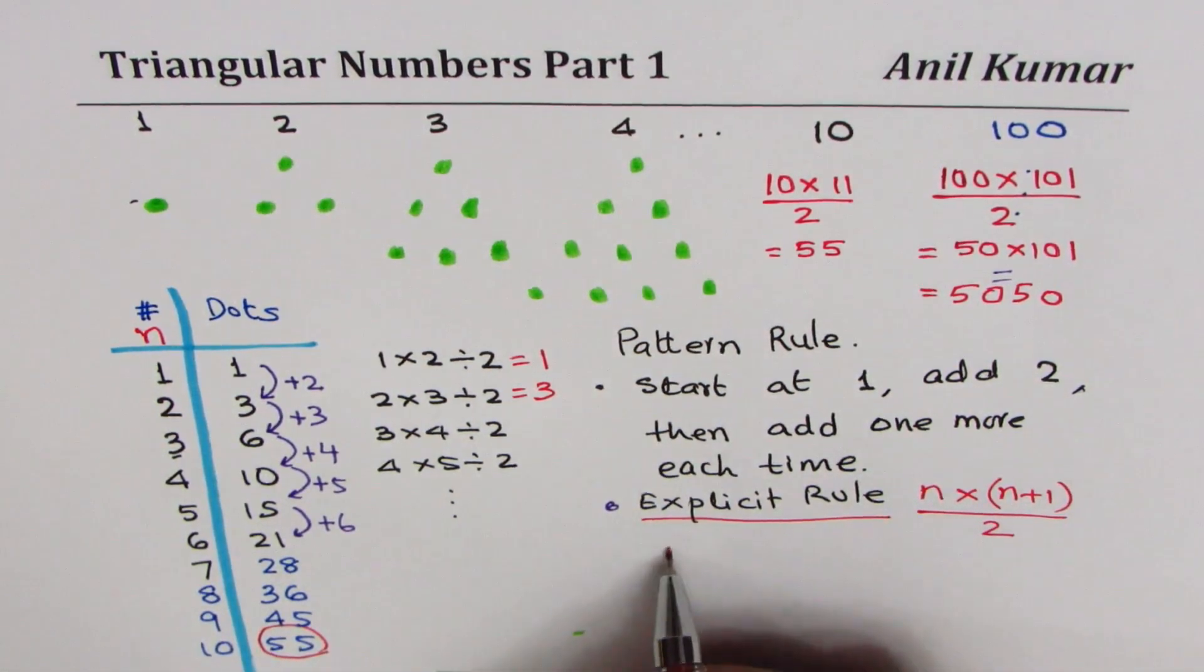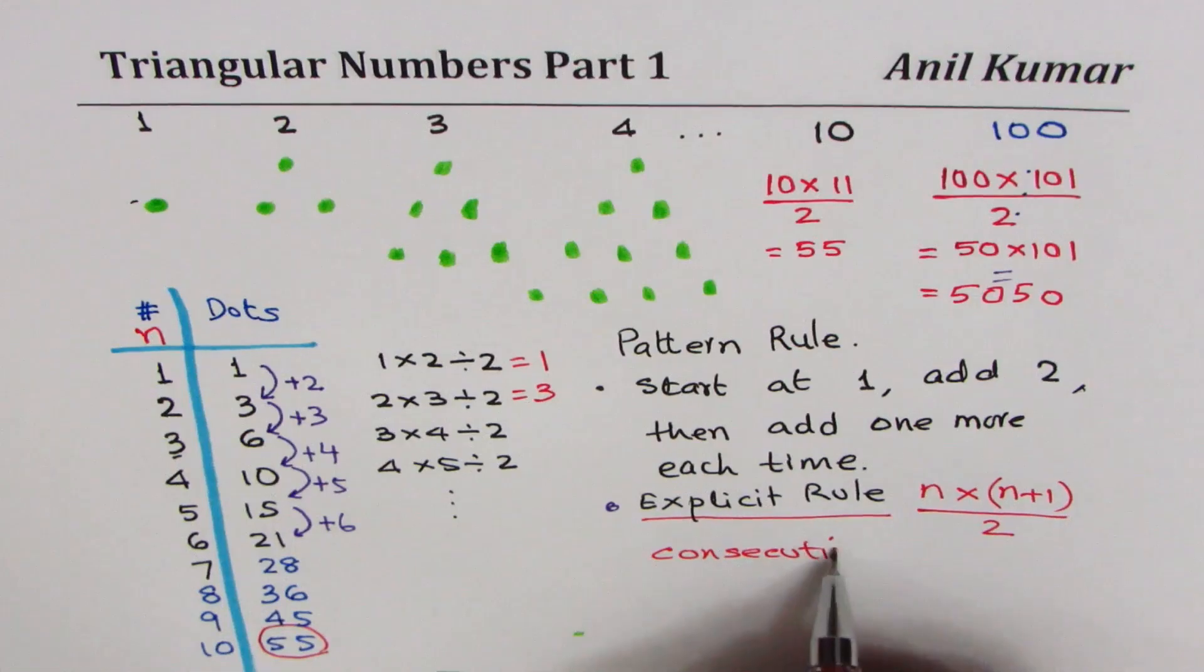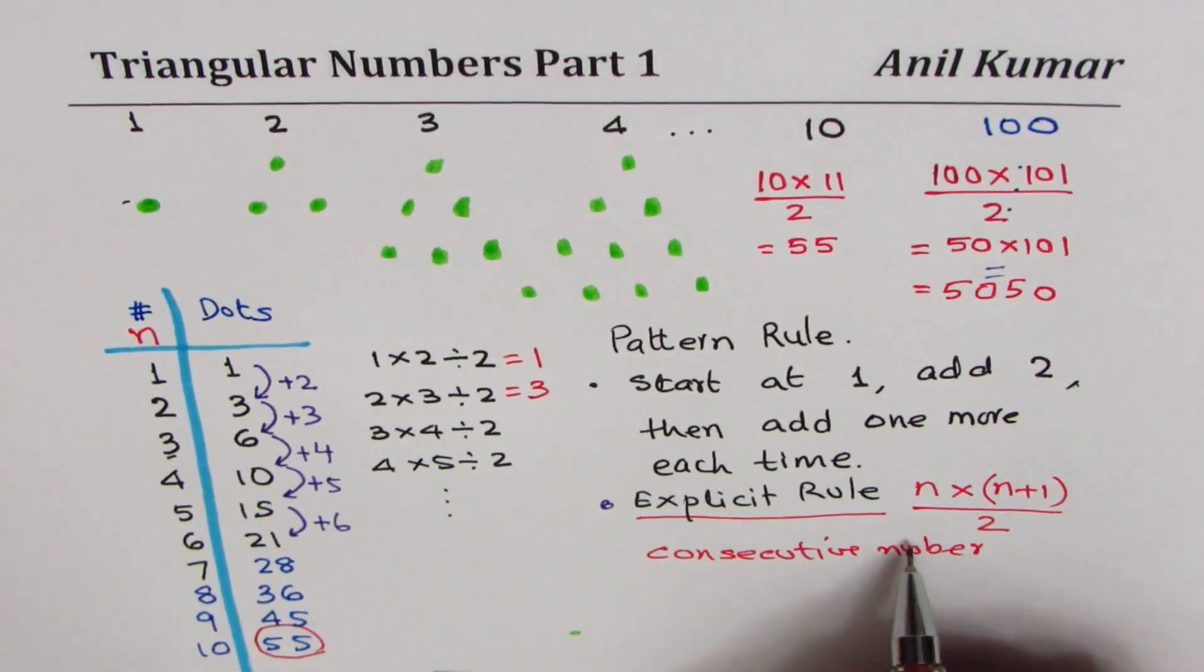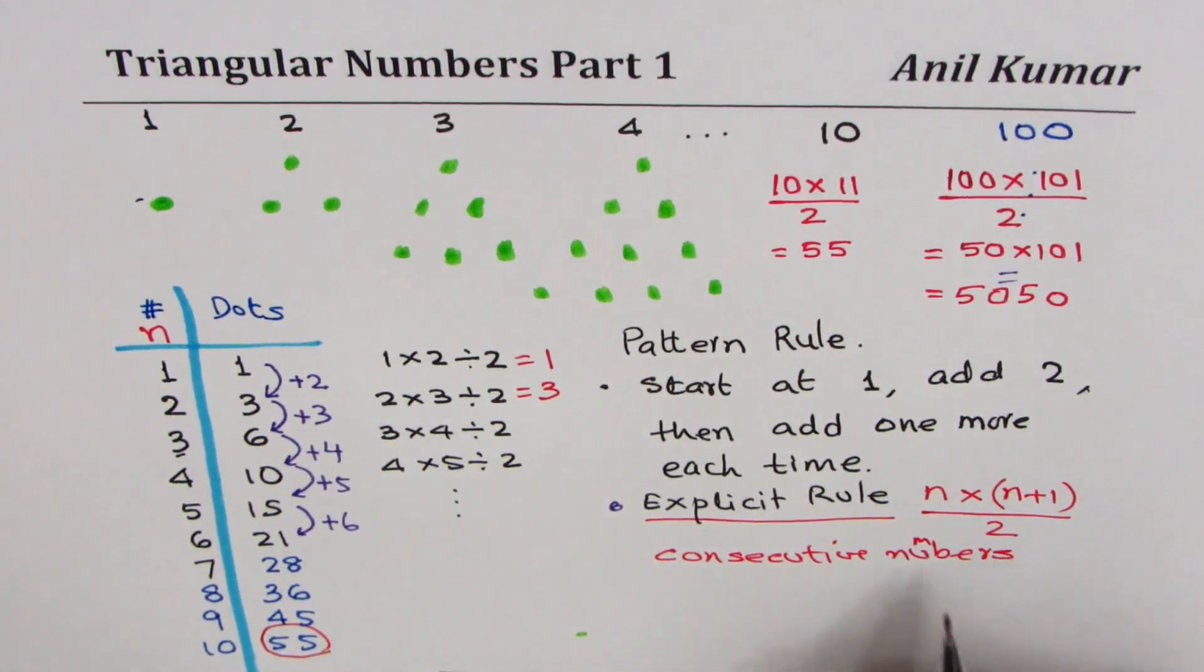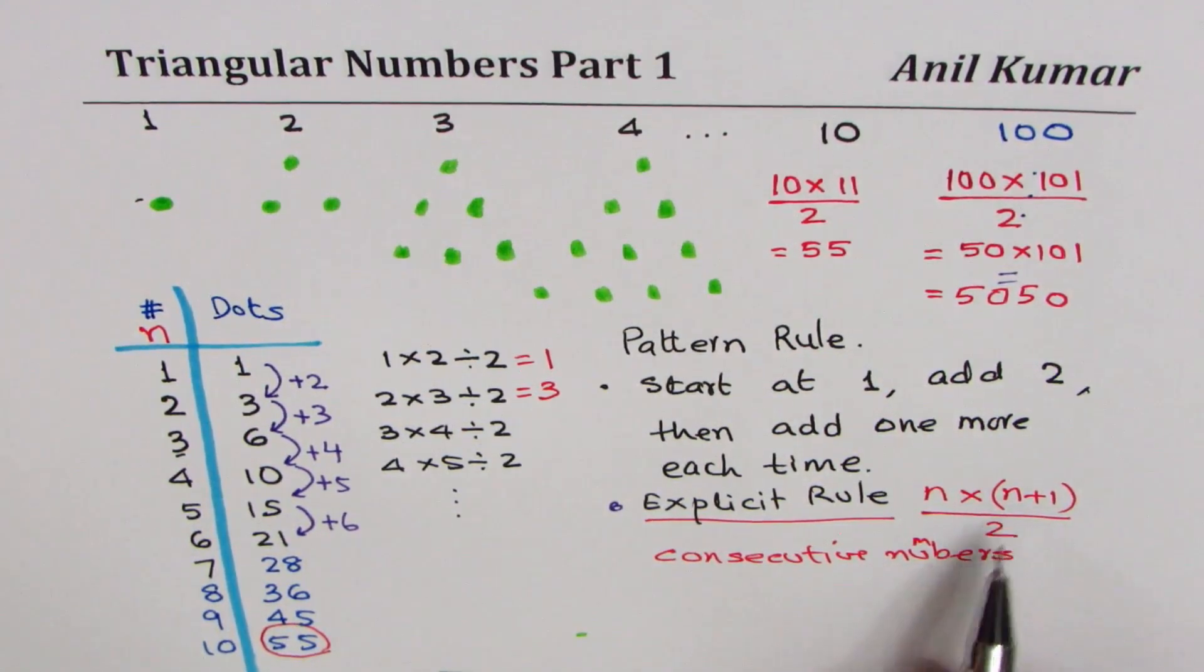these numbers are called consecutive numbers. These are consecutive numbers. So it is product of consecutive numbers divided by two. So half the product of consecutive numbers give you the numbers in your triangular patterns. Do you understand now? So that is how we get.